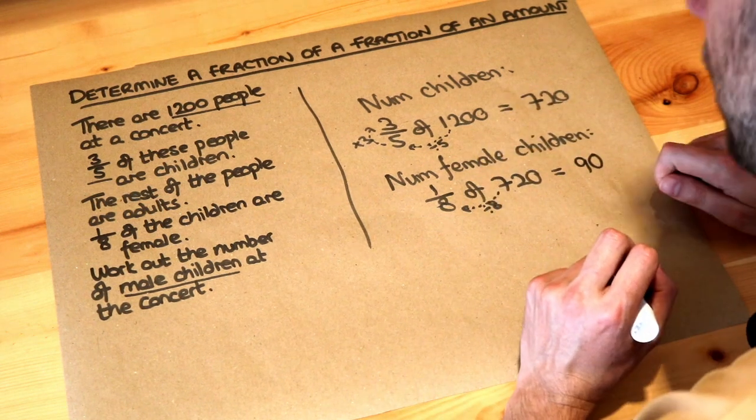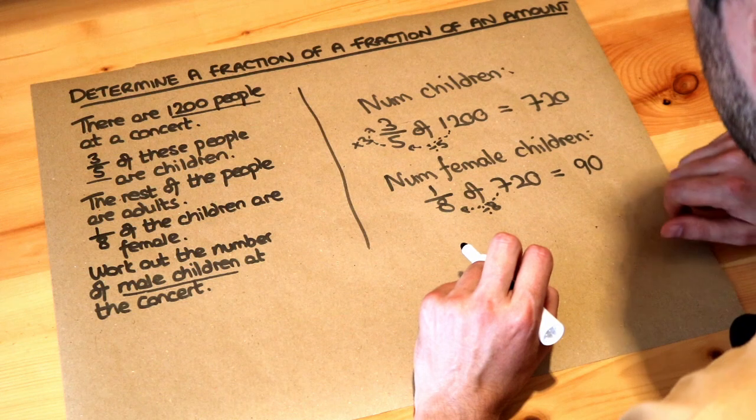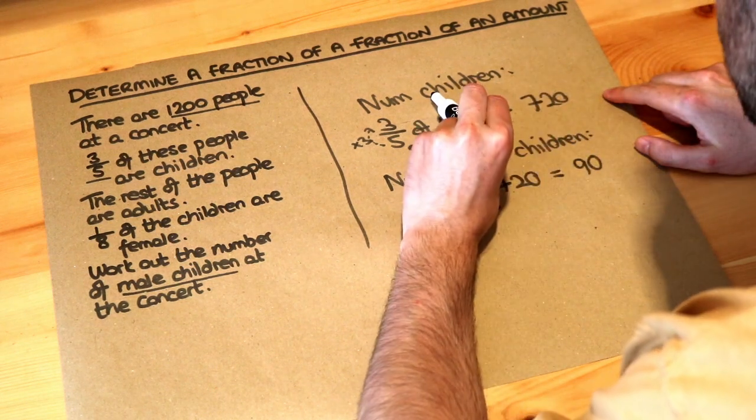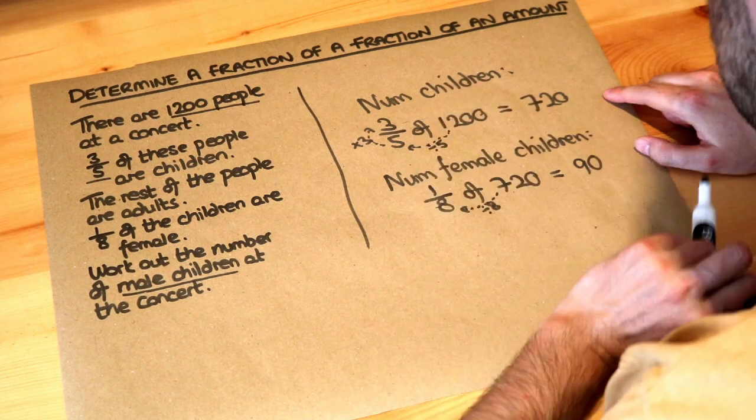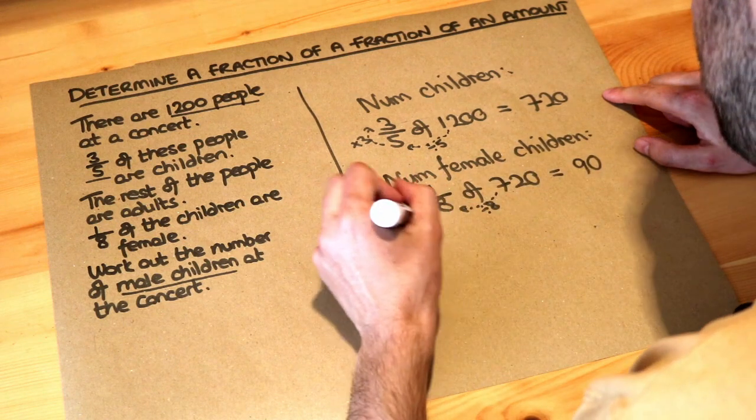So there's 90 female children but we want to work out the number of male children. Well let's think about this logically. If we have 720 children in total and 90 of those children are female the remainder are male so we just need to subtract these numbers.